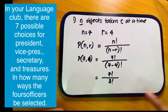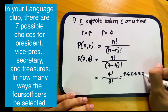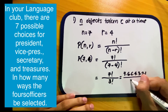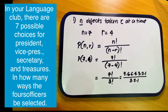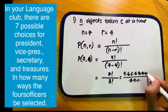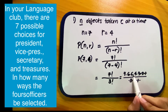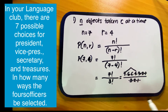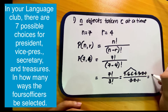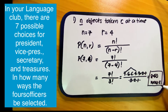Seven factorial is 7 × 6 × 5 × 4 × 3 × 2 × 1, and 3 factorial is 3 × 2 × 1. The 3 × 2 × 1 in the denominator cancels with the same terms in the numerator, leaving 7 × 6 × 5 × 4. Multiplying those gives 840, so there are 840 ways. That covers n objects taken r at a time.